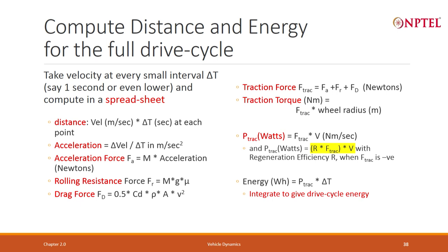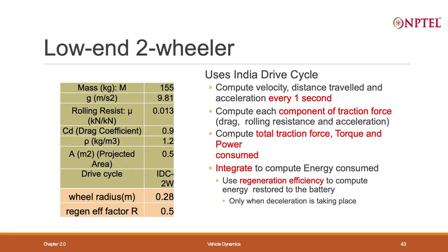So you have the traction force, torque, power, and energy — compute these and create a spreadsheet. For a two-wheeler example, the parameters you need to input are: mass, g, rolling resistance coefficient, drag coefficient, rho, frontal area A, and the drive cycle.